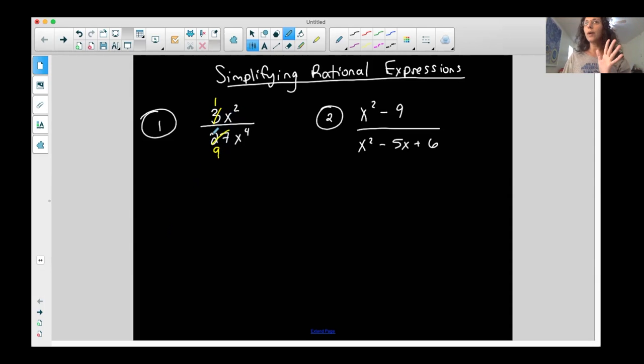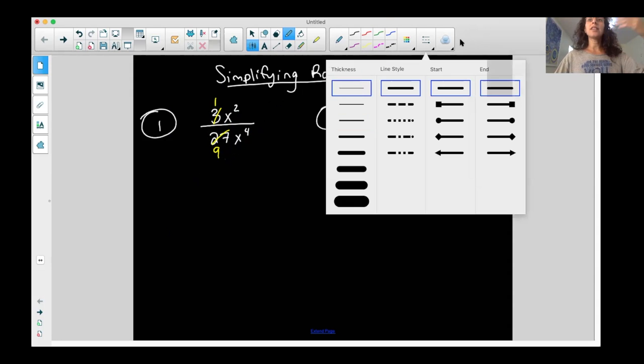This is only for a monomial and a monomial, okay? If I don't have that, then I do something different. So monomial and monomial, simplify the numbers first, and then let's look at the variables. Now I have x squared on top and x to the fourth on the bottom. So I have the same base, but different exponents, and I have technically two, right, x's,